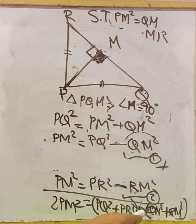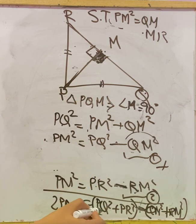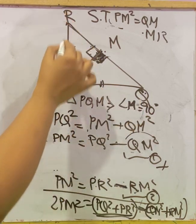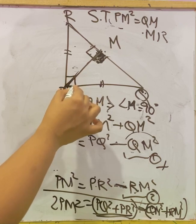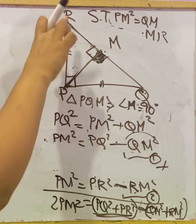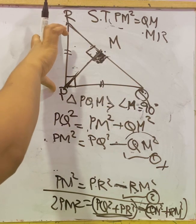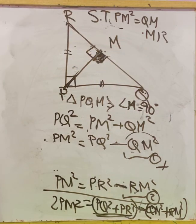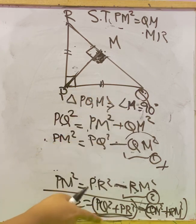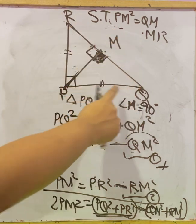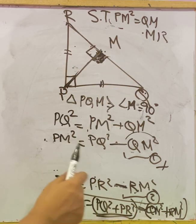Now comparing with the figure: △PQR is right-angled at P, so PQ is the base and PR is the altitude. By Pythagoras theorem in △PQR, PQ² + PR² = QR² (the hypotenuse). So we substitute PQ² + PR² with QR²: 2PM² = QR² − (QM² + RM²).